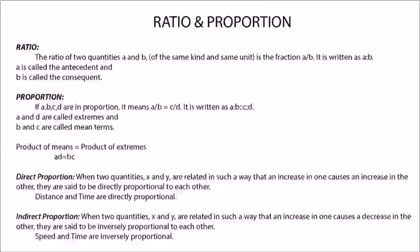Let us go through the main concepts in the chapter ratio and proportion. Ratio: The ratio of two quantities A and B is the fraction A by B and it is denoted as A is to B. A is the antecedent and B is the consequent.